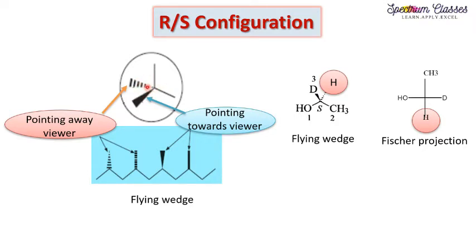It is important because every time we do not have Fischer projections for a given compound, it is easy to write the RS configuration in flying wedge form as well. Here, two lines simply drawn are in the plane of the paper, the solid wedge line is pointing towards my side, and the dashed wedge is pointing away. One thing to always remember: the dashed line group or atom is always considered on the vertical line.